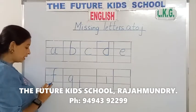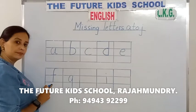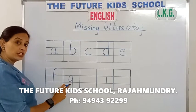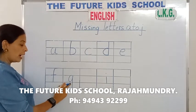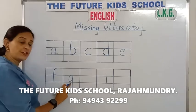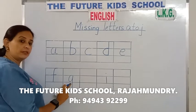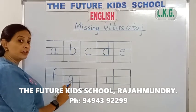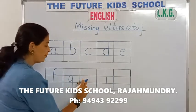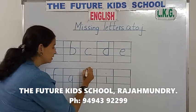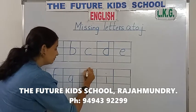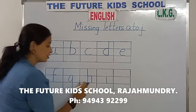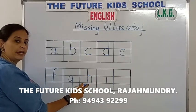What comes after F? Yes, the letter G. Good. And what letter comes after G children? Yes, the letter F. So fill in with the letter F. Small letter F.